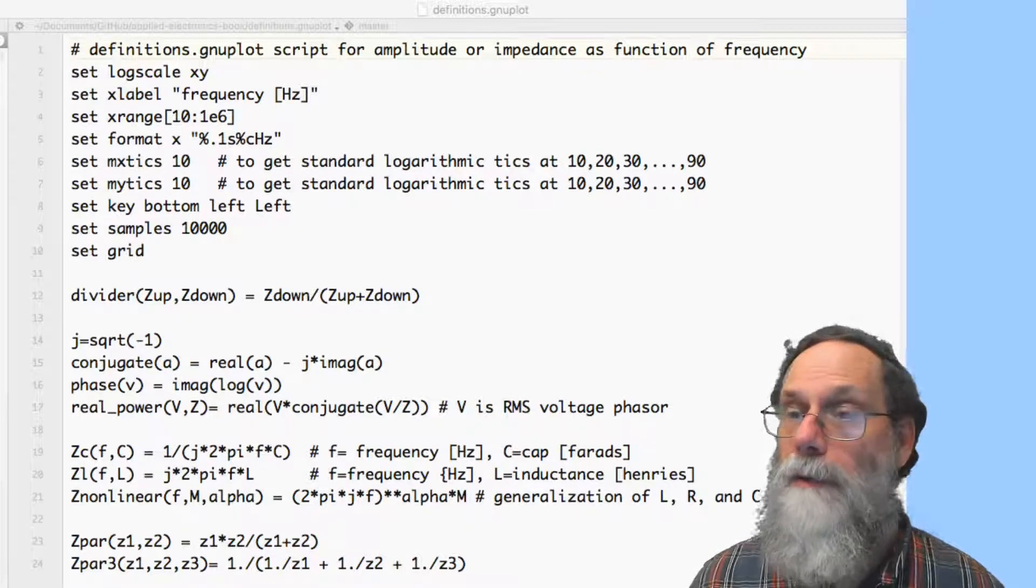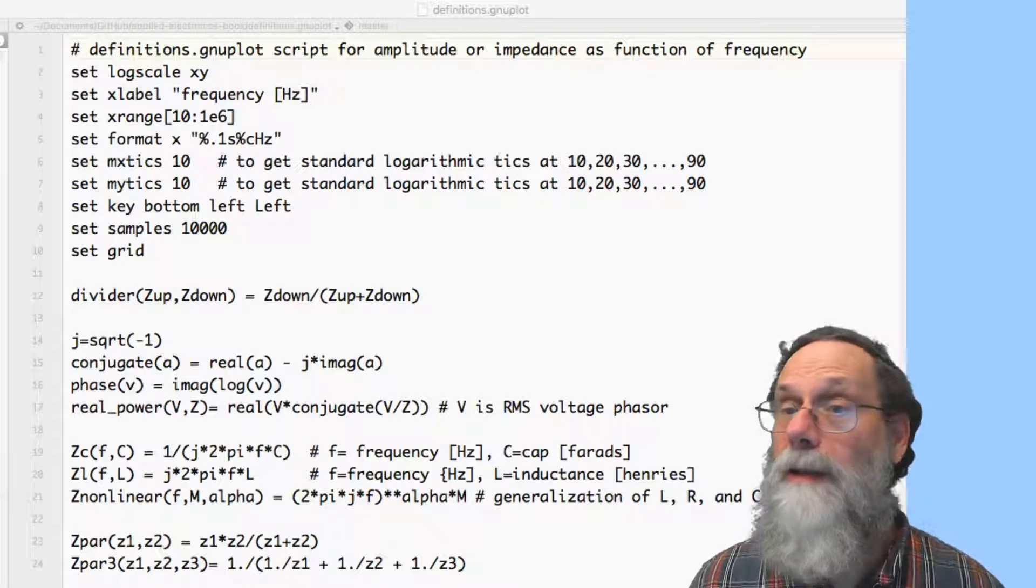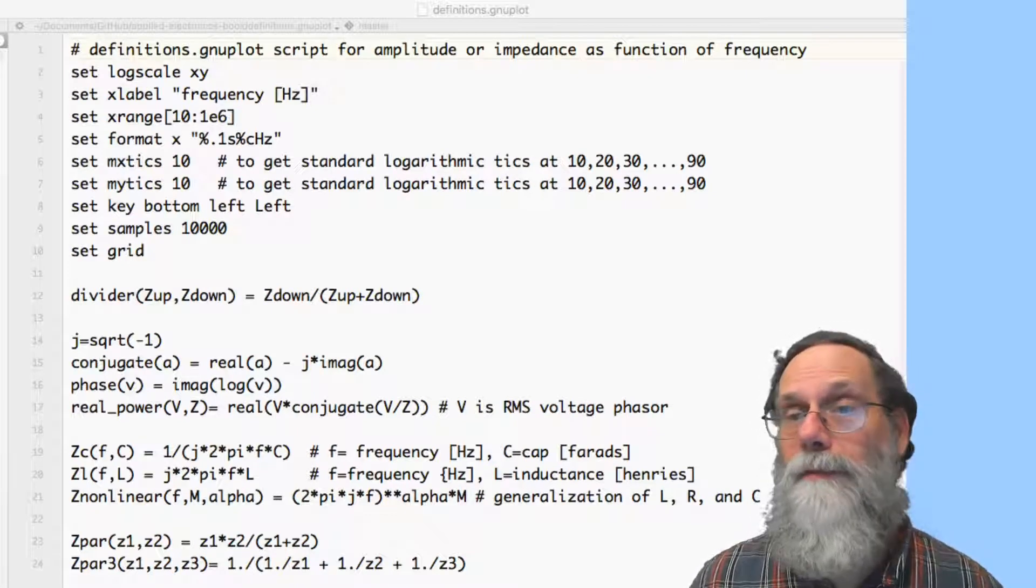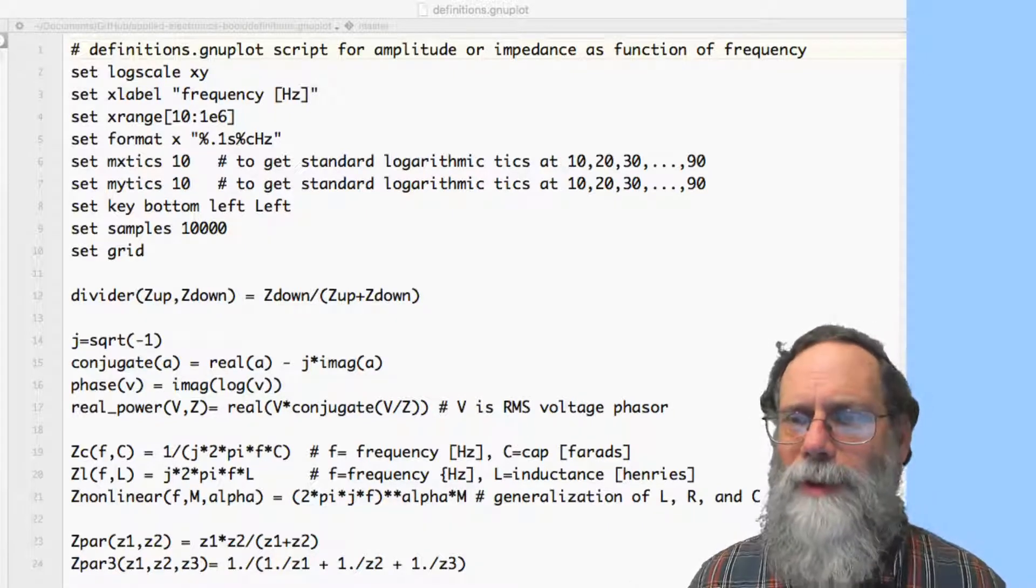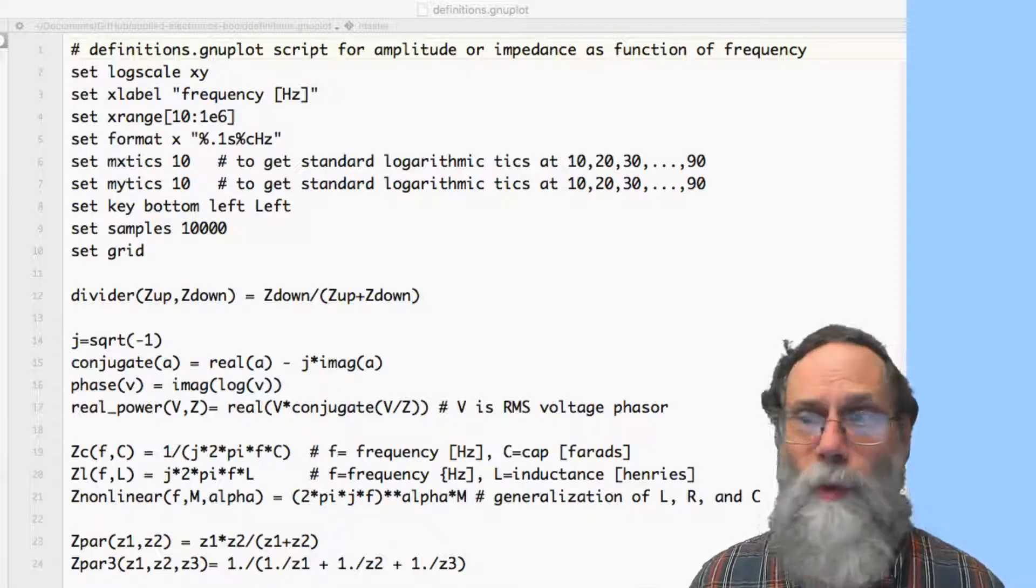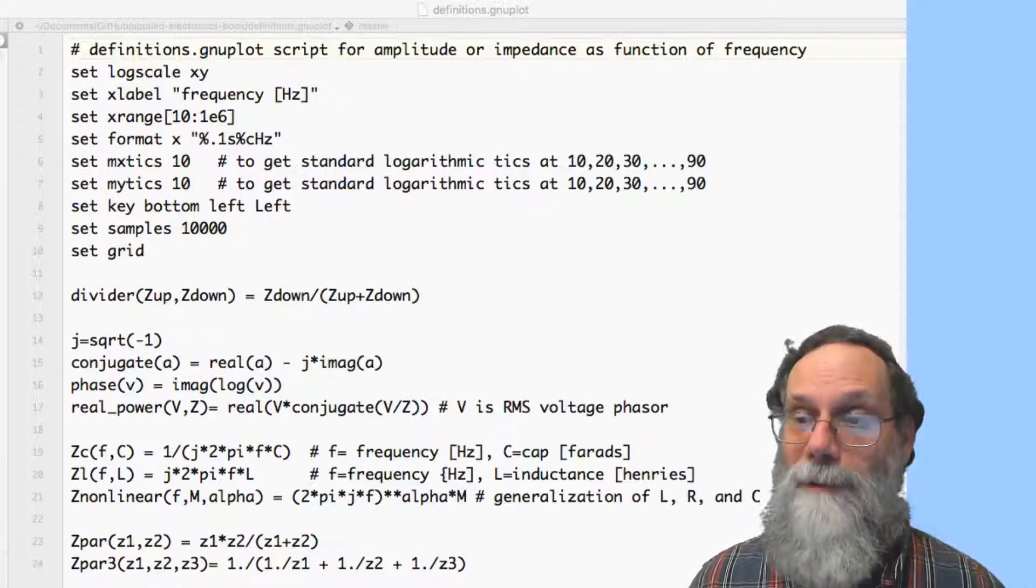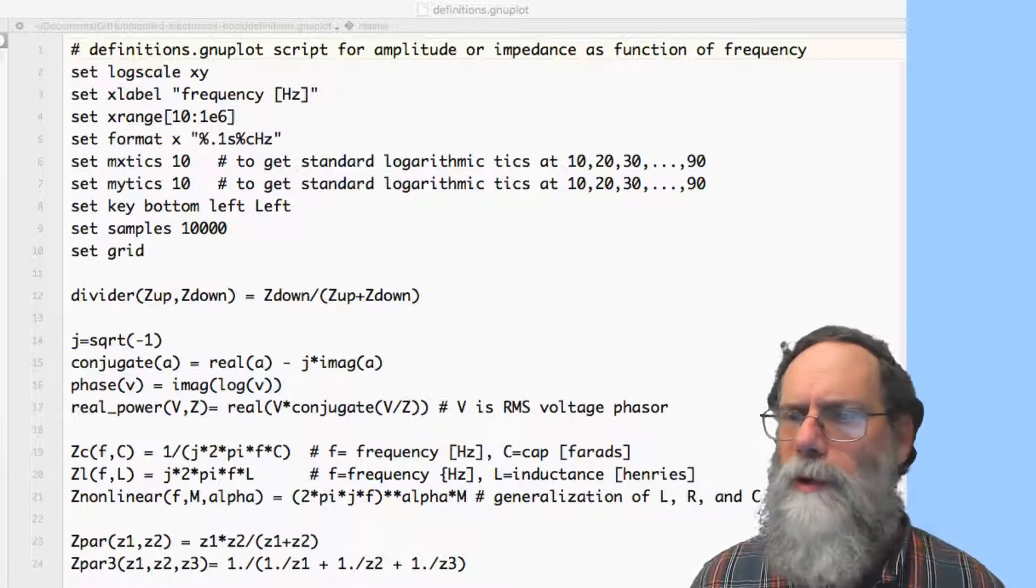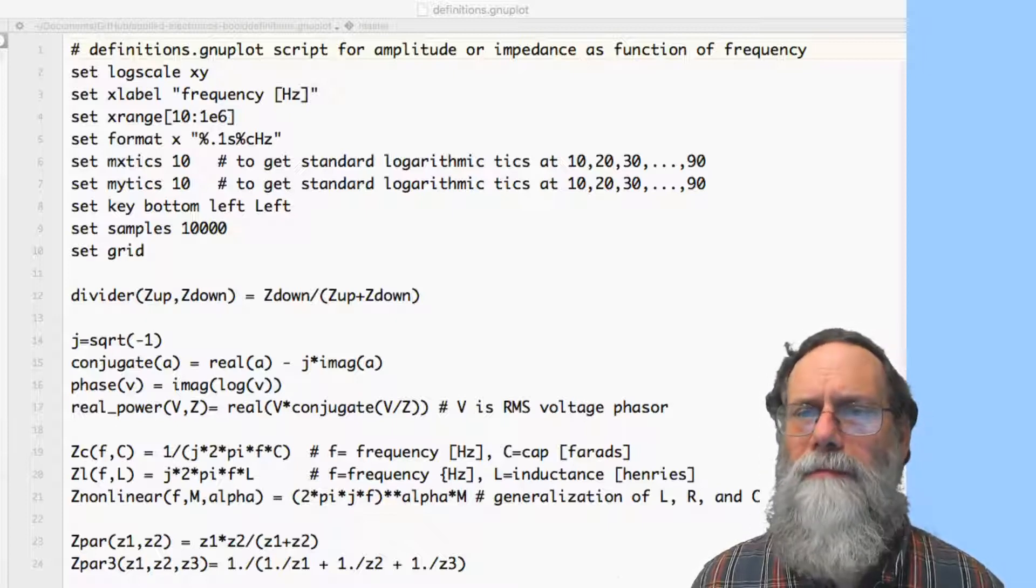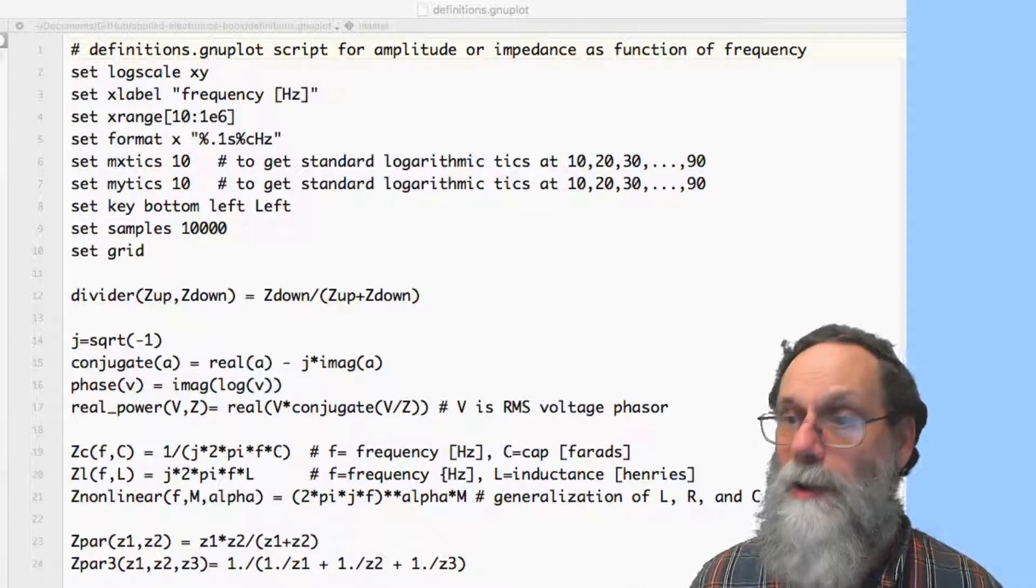I then have a number of useful functions. For instance, divider z up z down is a function that just gives me the voltage divider equation. Very simple. j is the square root of minus one. There is a built-in j, but it's got to be typed in a funny way. So I just make the variable j have the square root minus one, so I can do things like defining conjugate and phase. We won't be using those for a while in the class. Real power comes in the second half of the course.